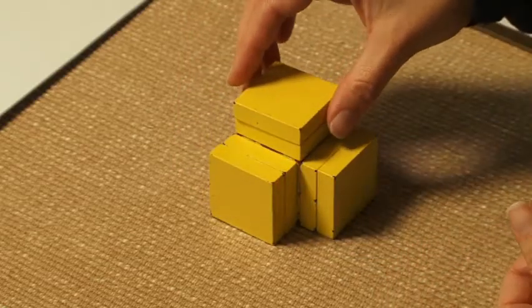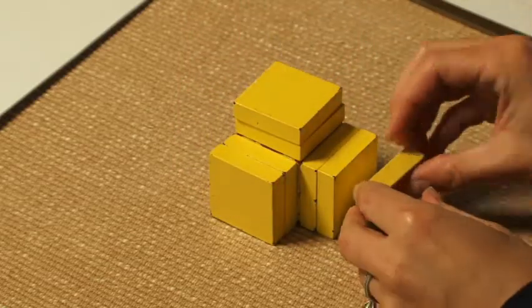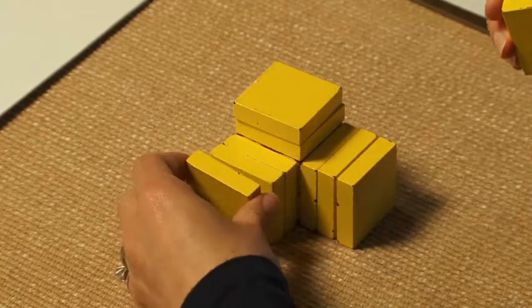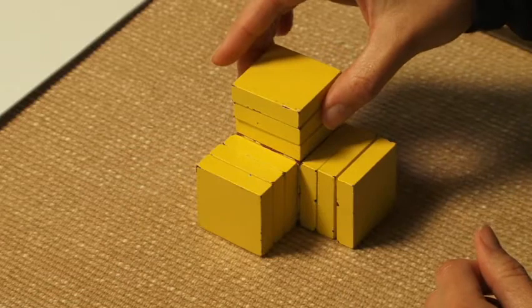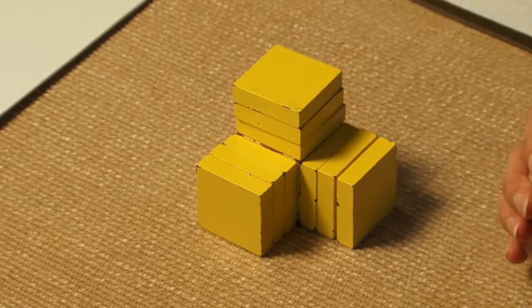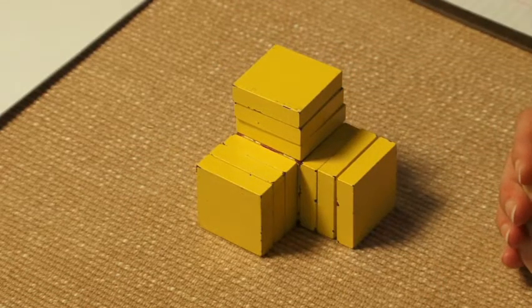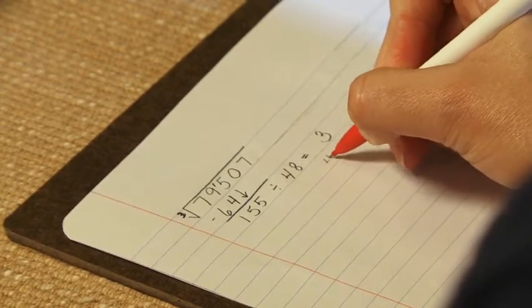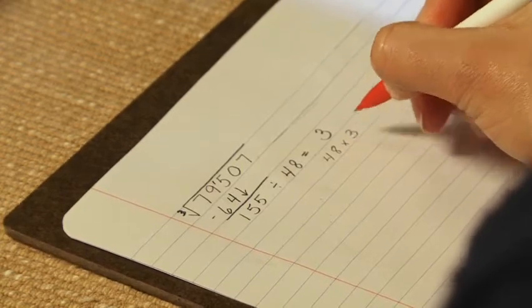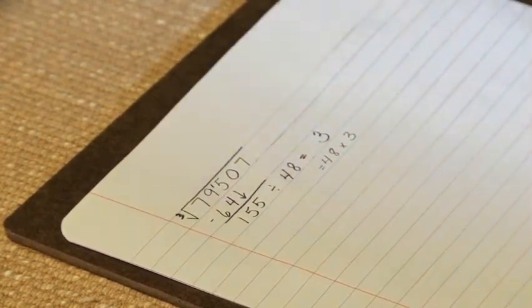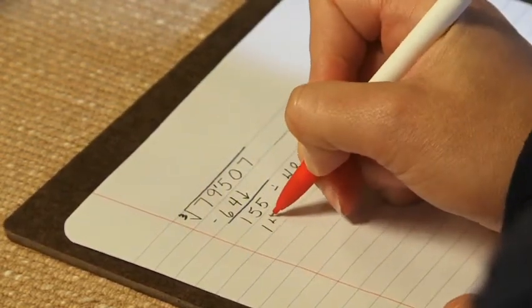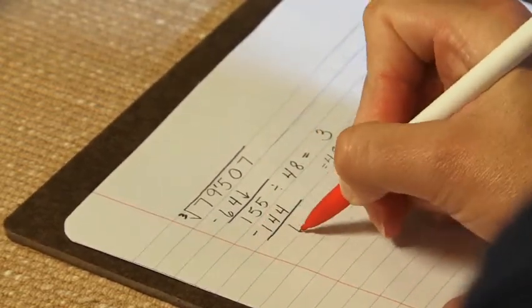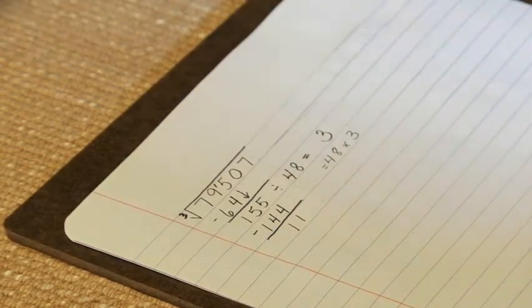This will be the second time, and this is the third time. We have 48, and we have that 3 times. So we're going to multiply 48 times 3 now, and that's going to give us 144. We'll subtract that from 155, and we have 11.